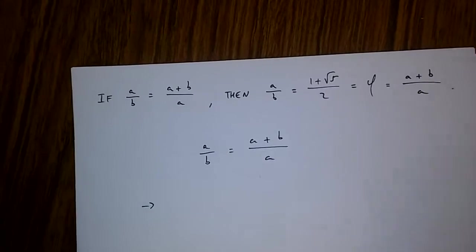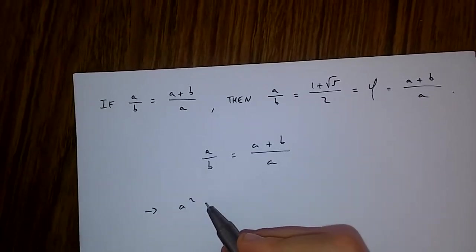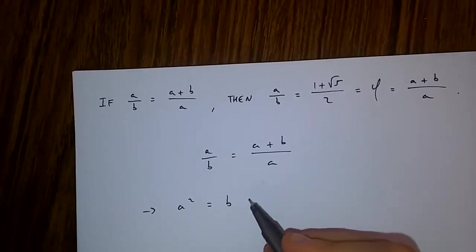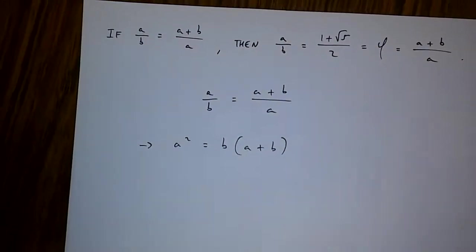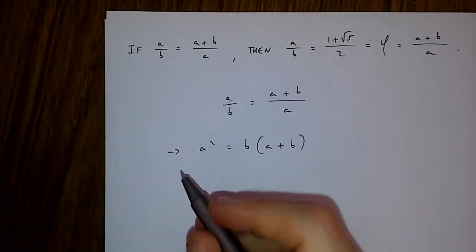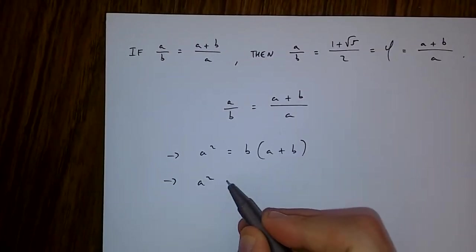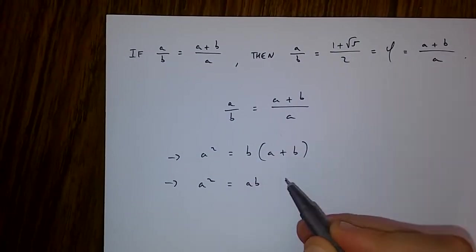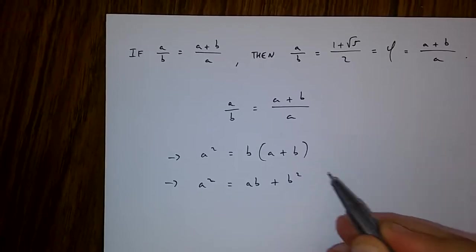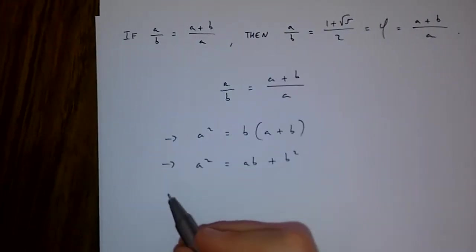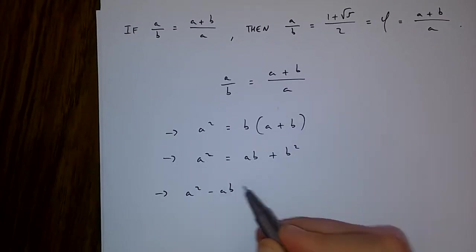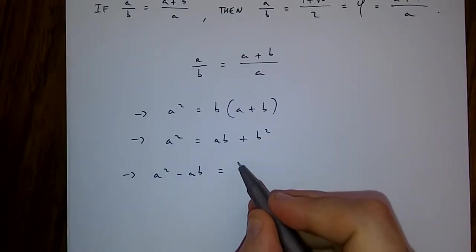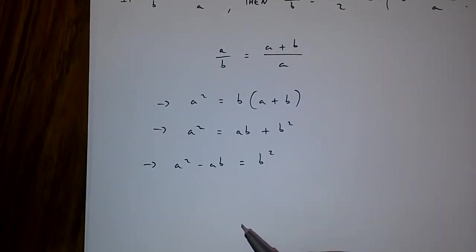If this is the case, then a² is equal to b times (a+b). Now from here, we get a² = ab + b², which means that a² - ab is equal to b².